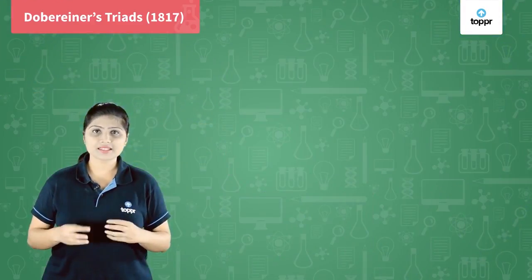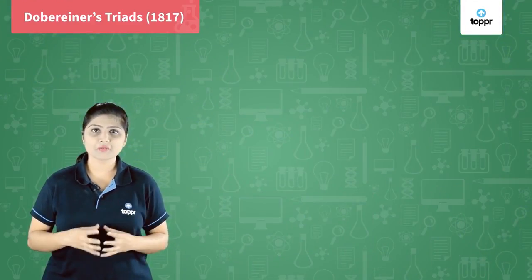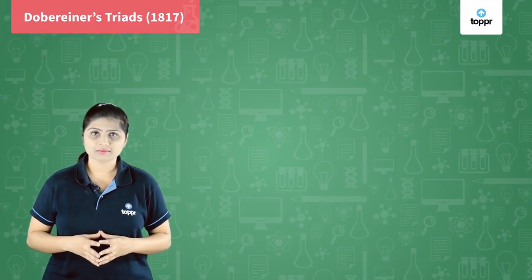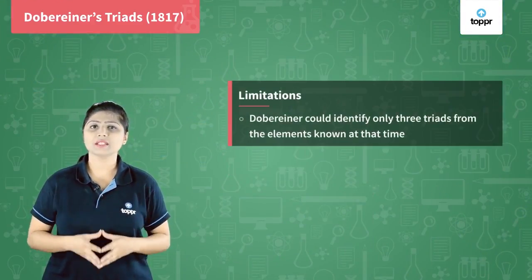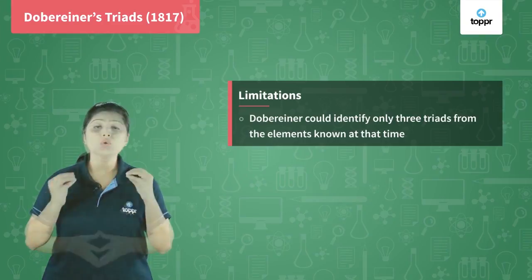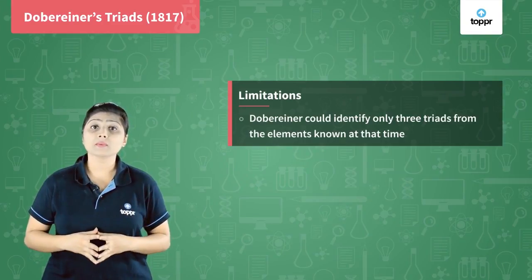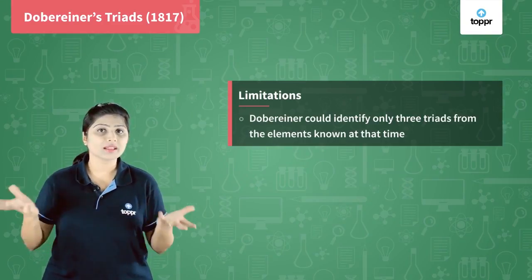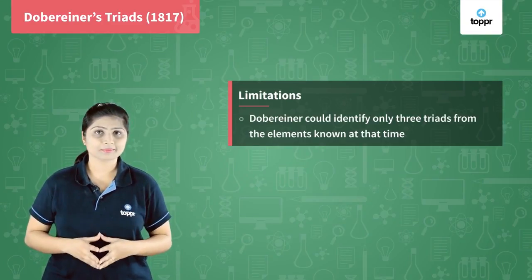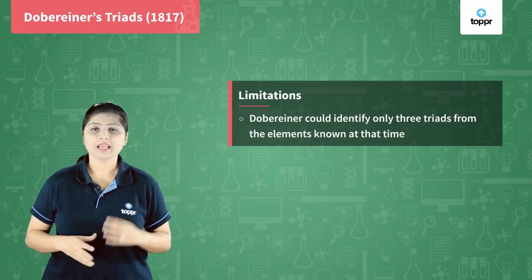This is a very smart concept that Döbereiner found out, but there was a limitation — he could only find three triads from the elements known at that time. Then came John Newlands, who was an English scientist.